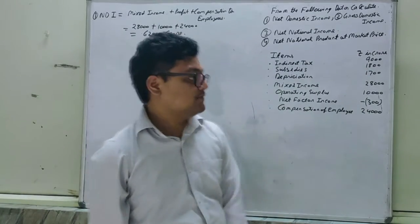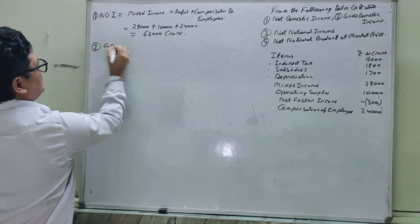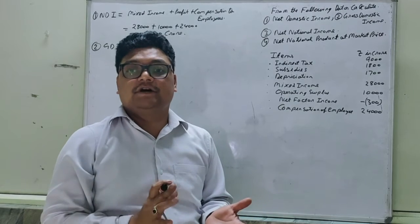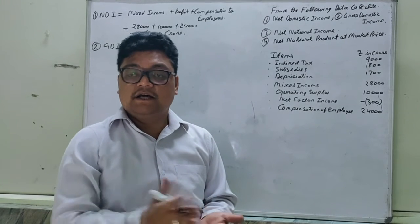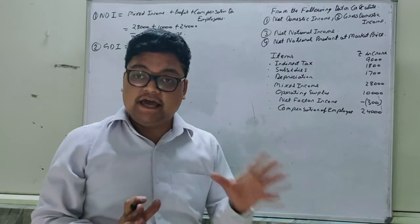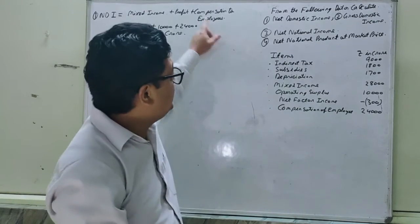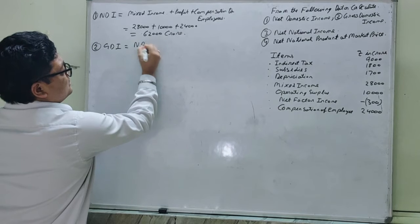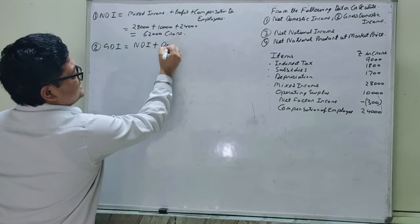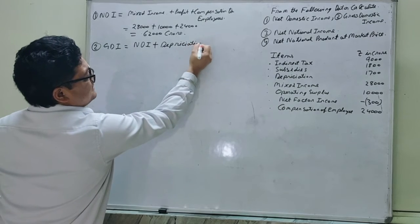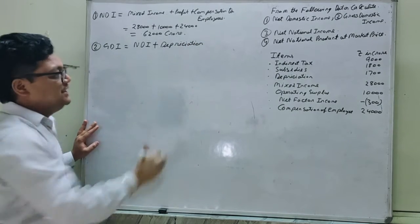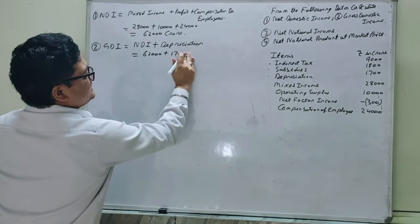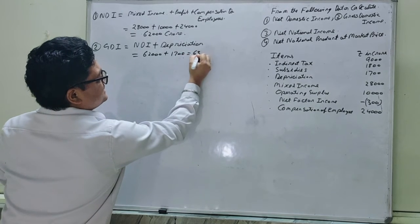Next is gross domestic income, GDI. GDI is that income which presents at first and includes depreciation. To calculate GDI, just take NDI plus depreciation. So 62,000 plus depreciation 1,700 becomes 63,700.